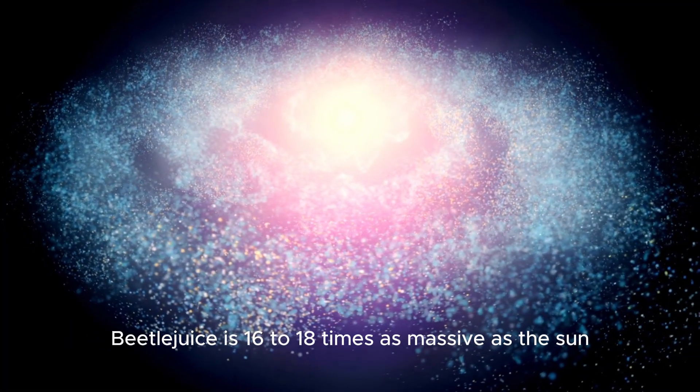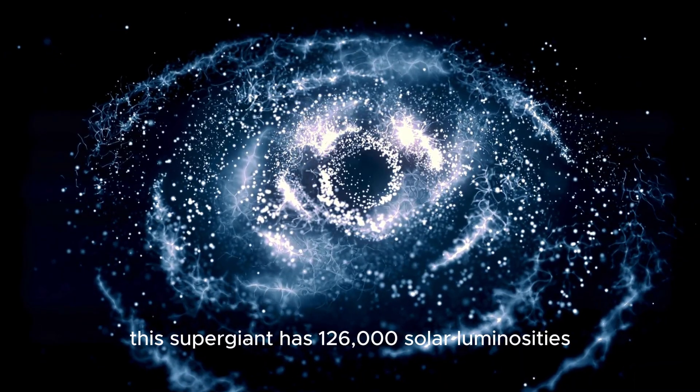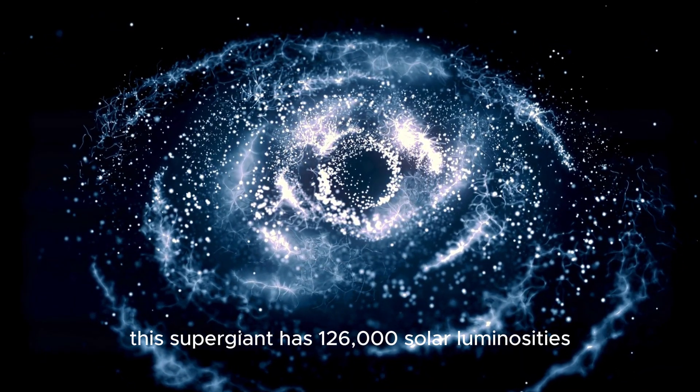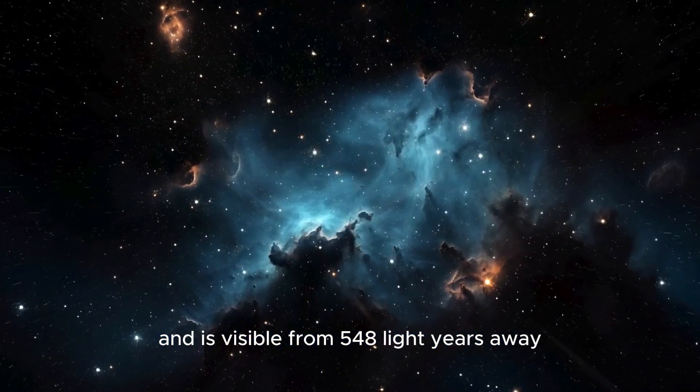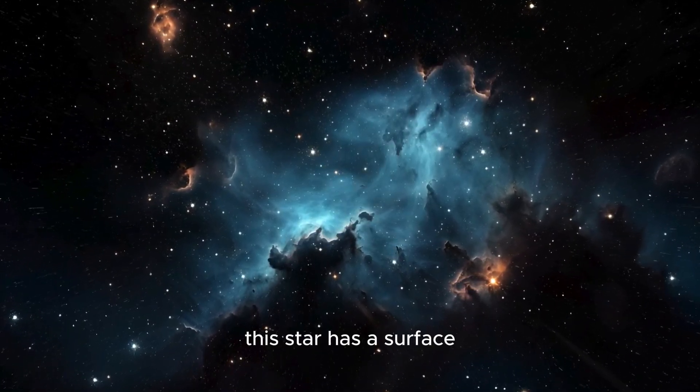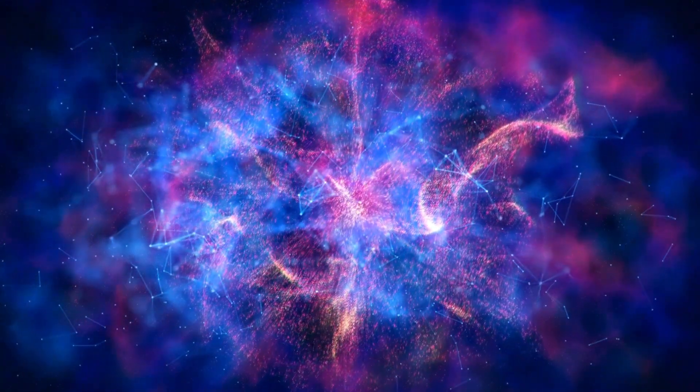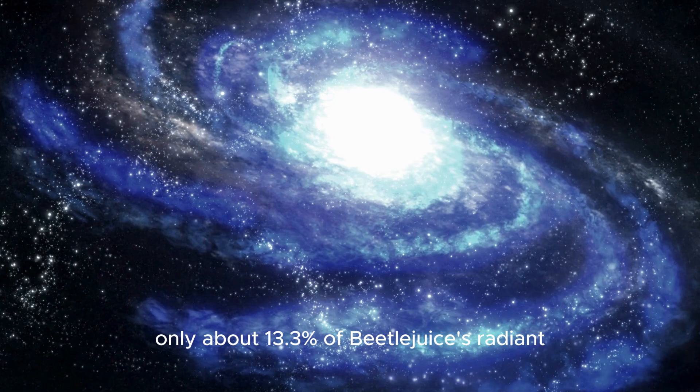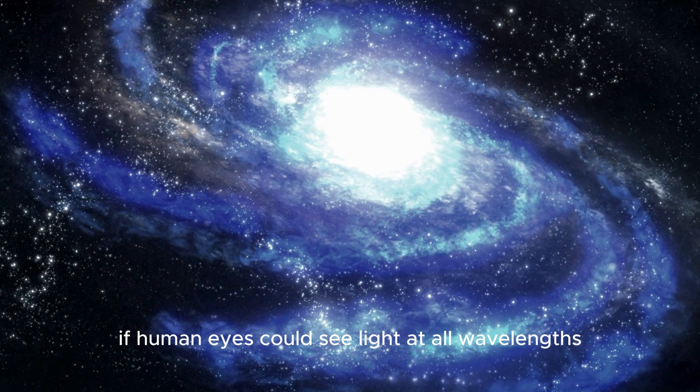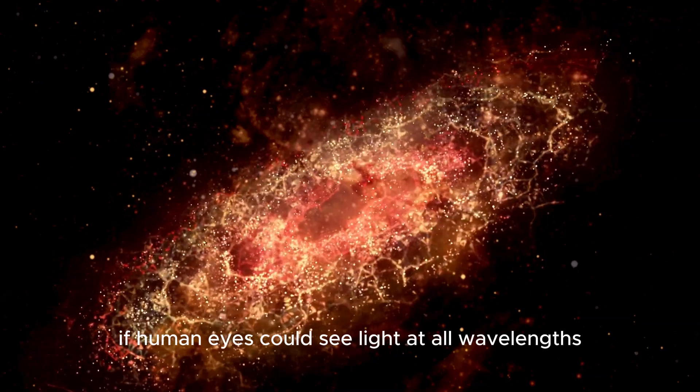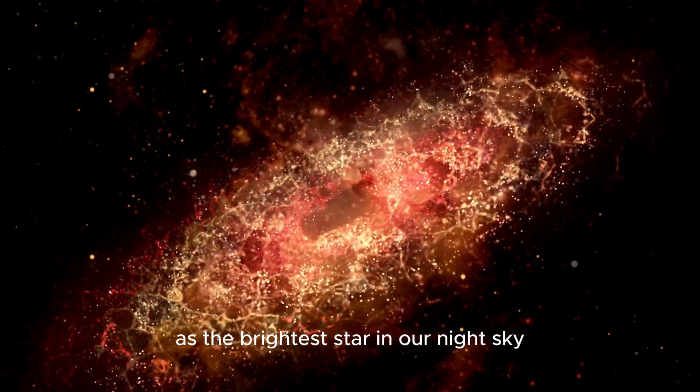Betelgeuse is 16 to 18 times as massive as the Sun. This supergiant has 126,000 solar luminosities and is visible from 548 light-years away. This star has a surface temperature of about 3,600 Kelvin, making it cooler than the Sun. Only about 13.3% of Betelgeuse's radiant energy is visible light. If human eyes could see light at all wavelengths, Betelgeuse would overtake Sirius as the brightest star in our night sky.